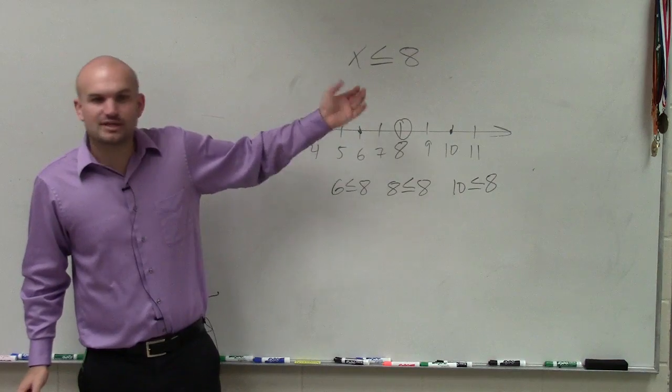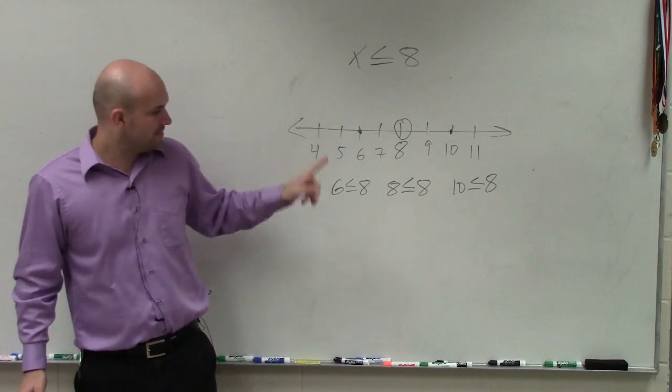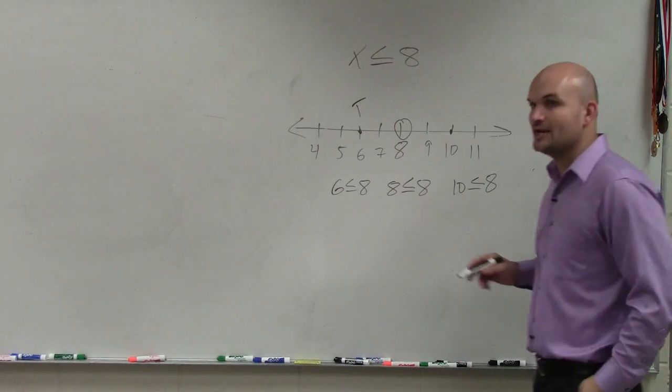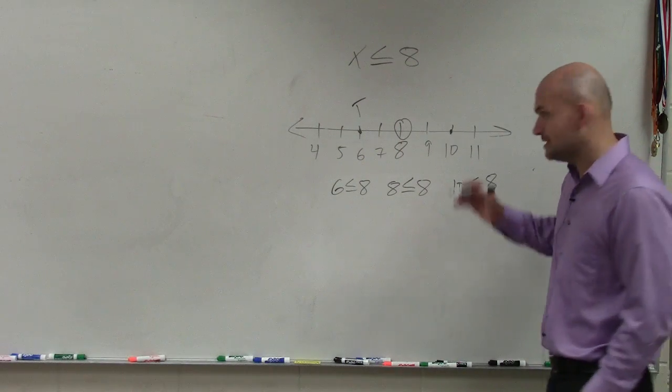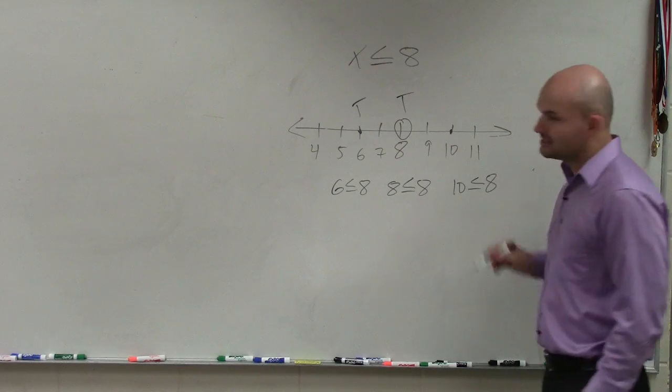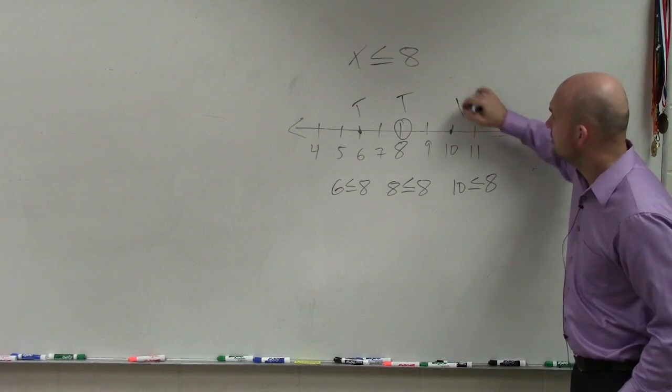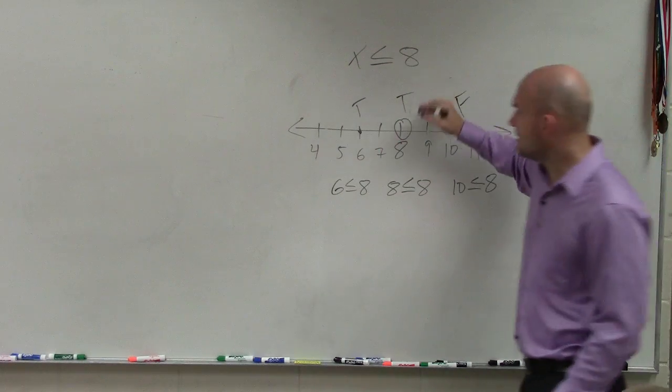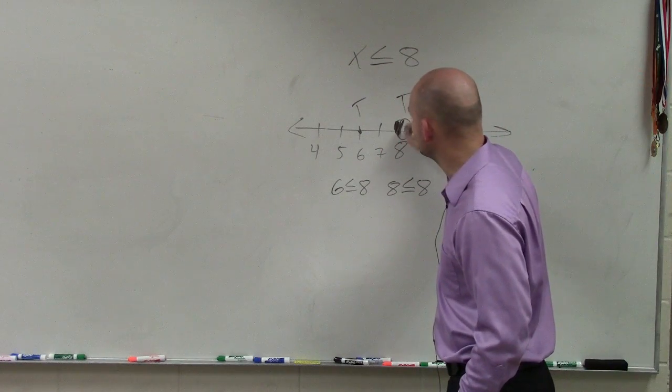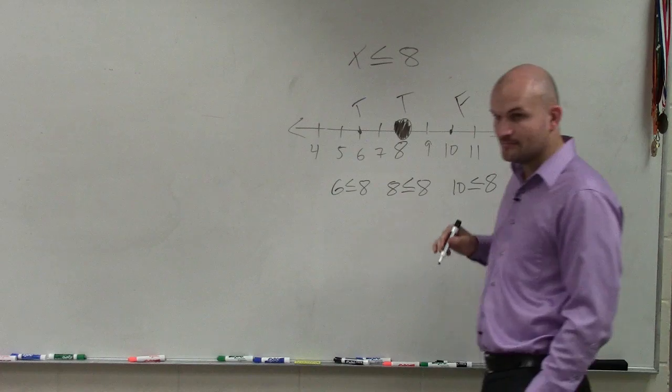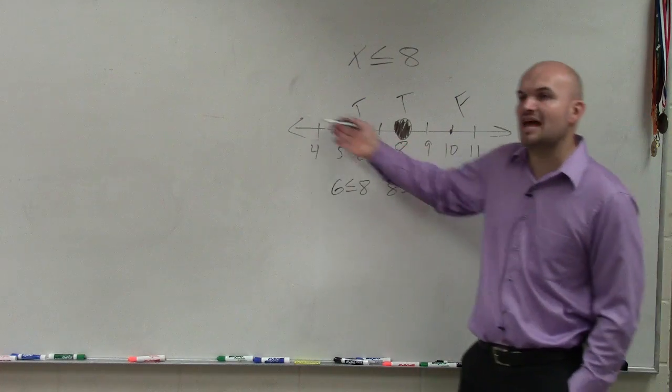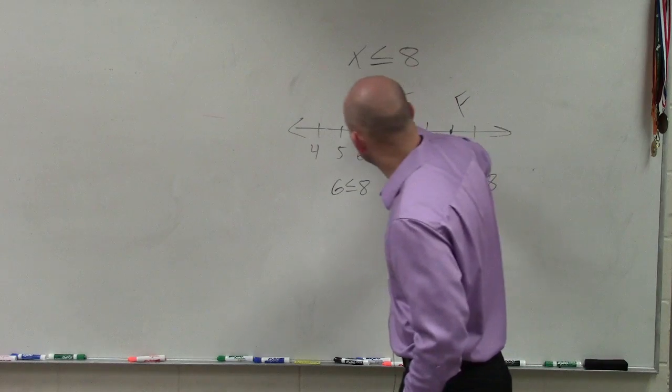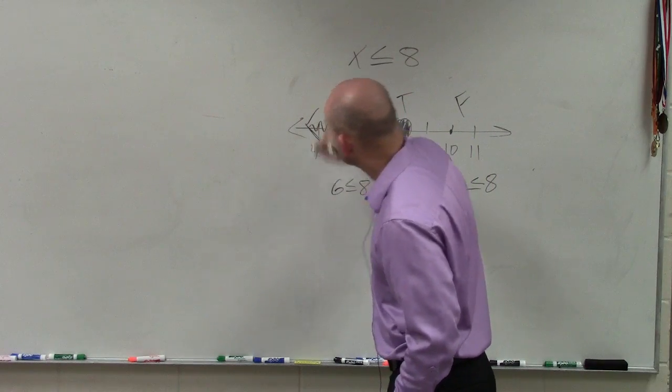So now we're just going to determine, we're just going to play a true or false game. Is 6 less than or equal to 8? True. Is 8 less than or equal to 8? Yes. Is 10 less than or equal to 8? No. So since our solution point is true, Nick is correct. We're going to close the point. It's a part of the solution. Since the points to the left of my solution are true, that means all of them are going to be true. So we're going to shade to the left.